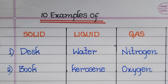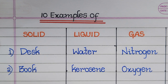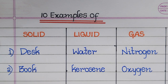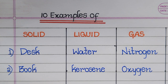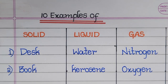First two examples of solid are desk and book. First two examples of liquid are water and kerosene. First two examples of gas are nitrogen and oxygen.